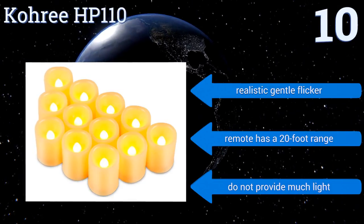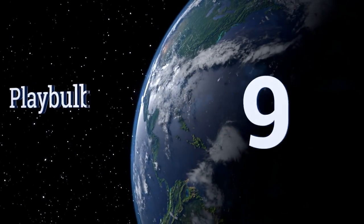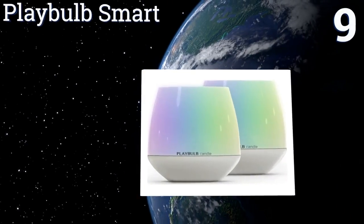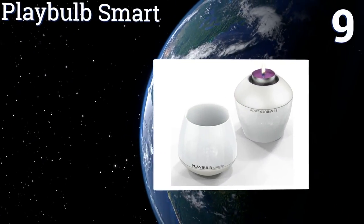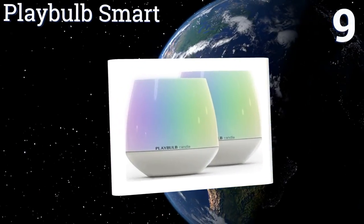However, they don't provide much light. At number nine, timeless charm and technology meet in the Playbulb Smart. You can control the color, brightness, and flickering of the bulbs from your Bluetooth enabled phone.